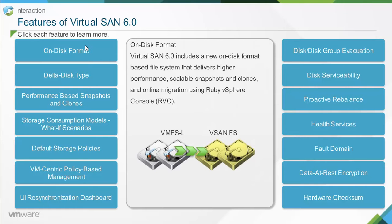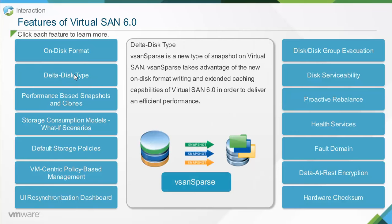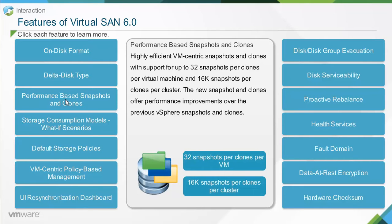Virtual SAN 6.0 includes a new on-disk format based file system that delivers higher performance, scalable snapshots and clones, and online migration using Ruby vSphere Console or RVC. vSAN Sparse is a new type of snapshot on Virtual SAN that takes advantage of the new on-disk format writing and extended caching capabilities of Virtual SAN 6.0 for efficient performance. Virtual SAN 6.0 supports highly efficient VM-centric snapshots and clones with support for up to 32 snapshots or clones per virtual machine and 16,000 snapshots or clones per cluster.